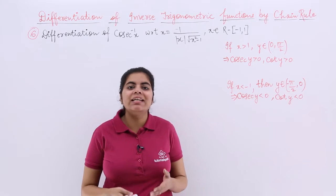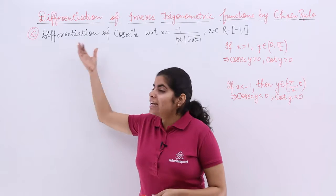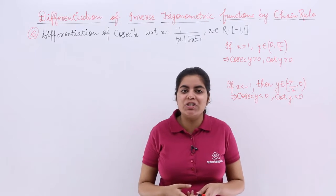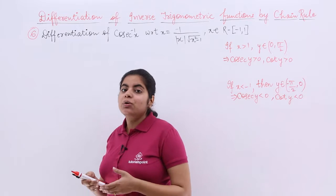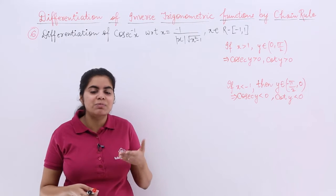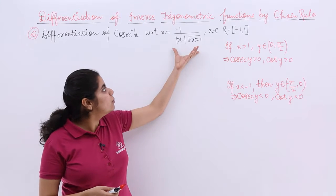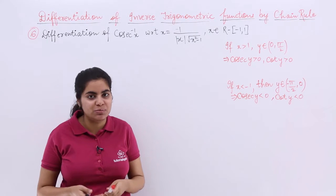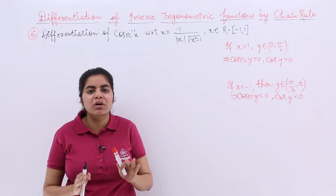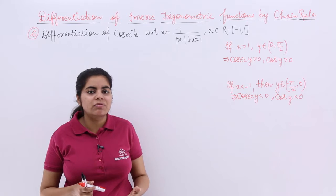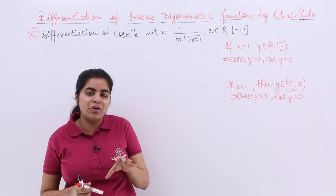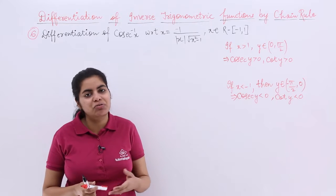In this video, let's see the differentiation of the next inverse trigonometric function. The next inverse trigonometric function is cosecant inverse x. Its differentiation with respect to x is equal to minus 1 upon mod x, under root x squared minus 1. Just like what we did for secant inverse x, we are going to do for cosecant inverse x. Before watching this video, please watch the inverse trigonometric function secant inverse x differentiation video.